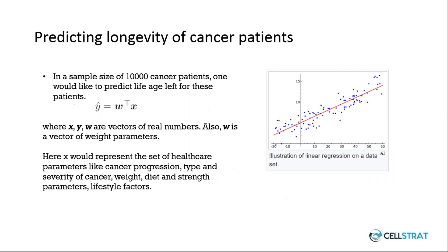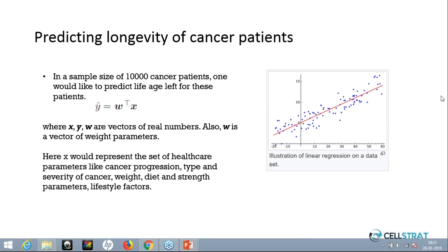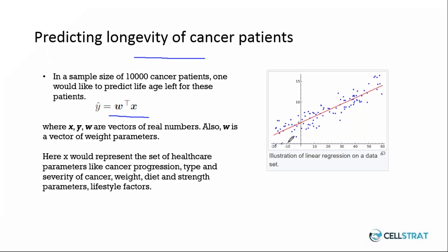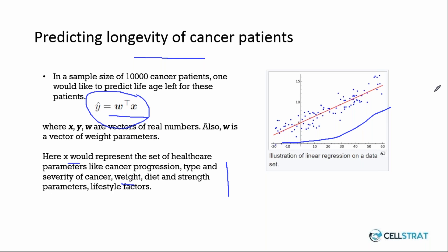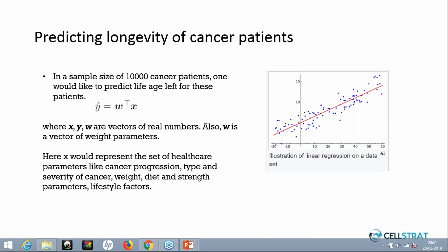As a use case, consider predicting the longevity of cancer patients. Given 10,000 historical cancer patient records, we can develop a regression model predicting how much life is left. X would represent features influencing cancer progression — type and sensitivity, severity of cancer, weight, diet, lifestyle, mental health, and thousands more. Using this model, we predict longevity for future patients. That's why hospitals are now using machine learning algorithms from Google or IBM Watson for oncology and cancer predictions.